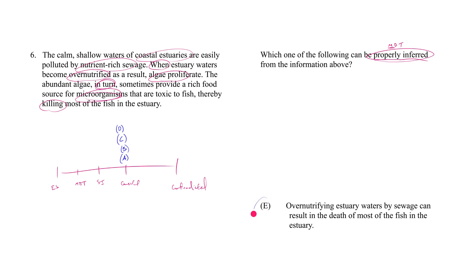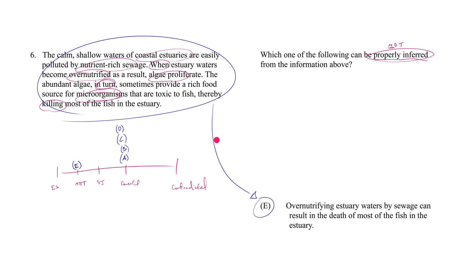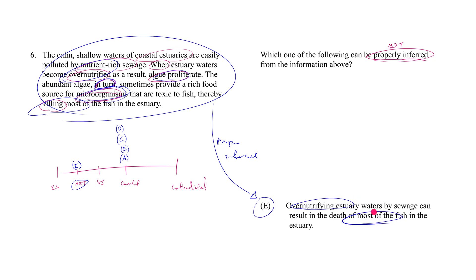Finally, answer E — which by process of elimination we know has to be right — says: 'over-neutrifying estuary waters by sewage can result in the death of most of the fish in the estuary.' Why must E be true? It's because of the causal chain. We know over-neutrifying estuary waters results in algae proliferation. Algae proliferation sometimes provides a rich food source for microorganisms, which in turn kill most fish in the estuary. It's very important to pay attention to the link the answer choice establishes: the word 'can.'